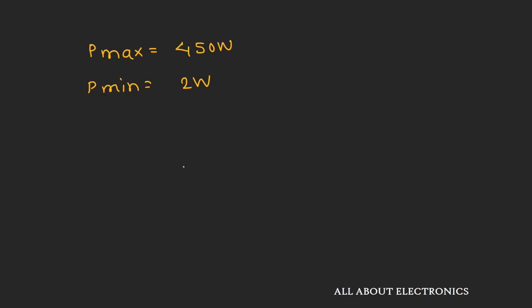The key point here is that for power calculations, we cannot directly use the superposition theorem. Instead, for power calculation, we must first find the total current I_T or voltage across the particular element, and from that compute the total power dissipated.